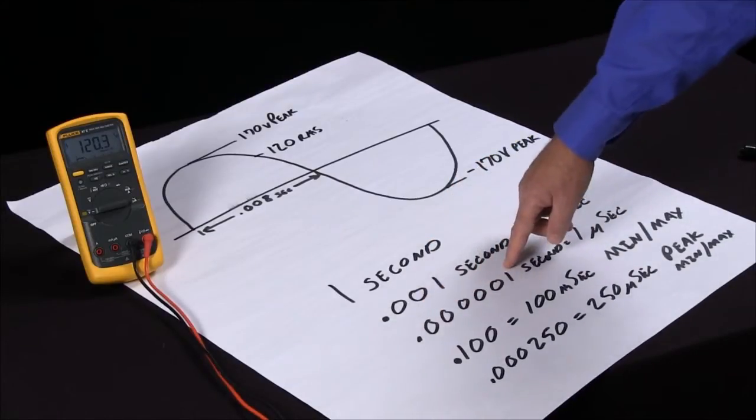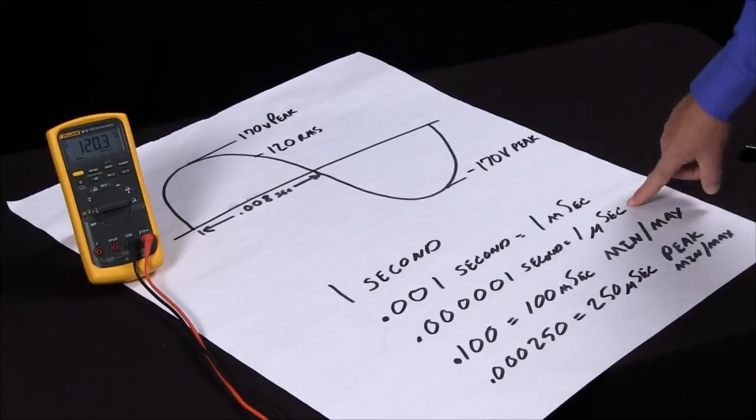If we go six places past the decimal place, we're down into one microsecond.